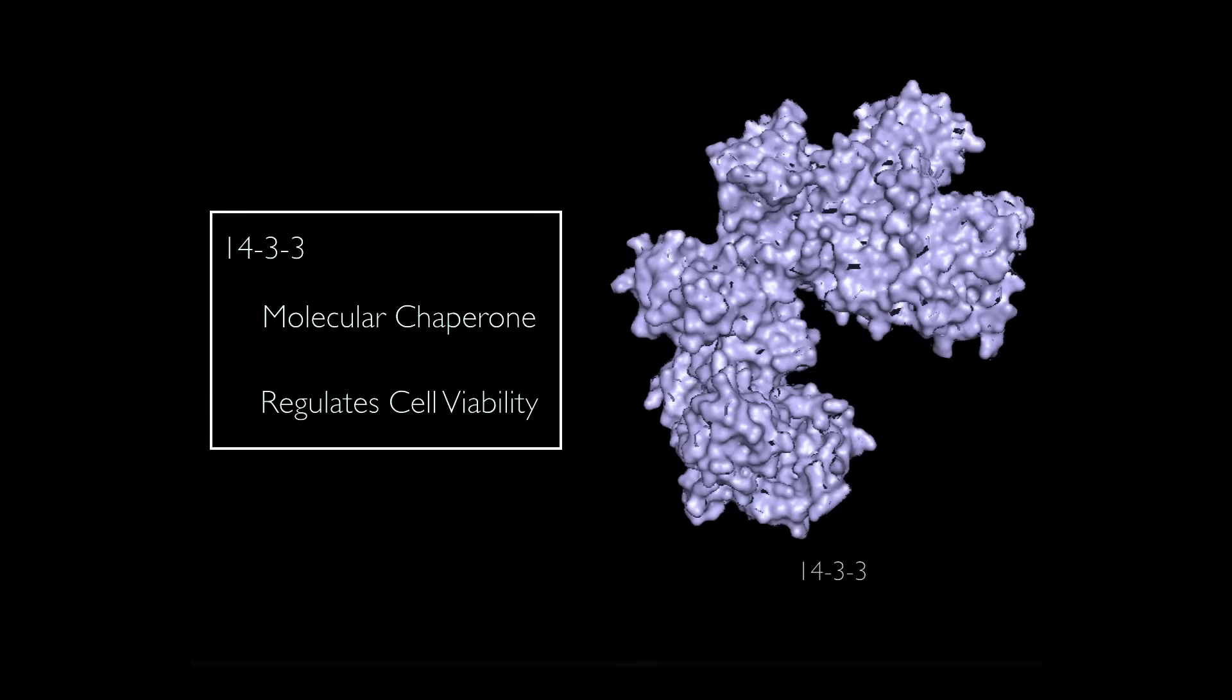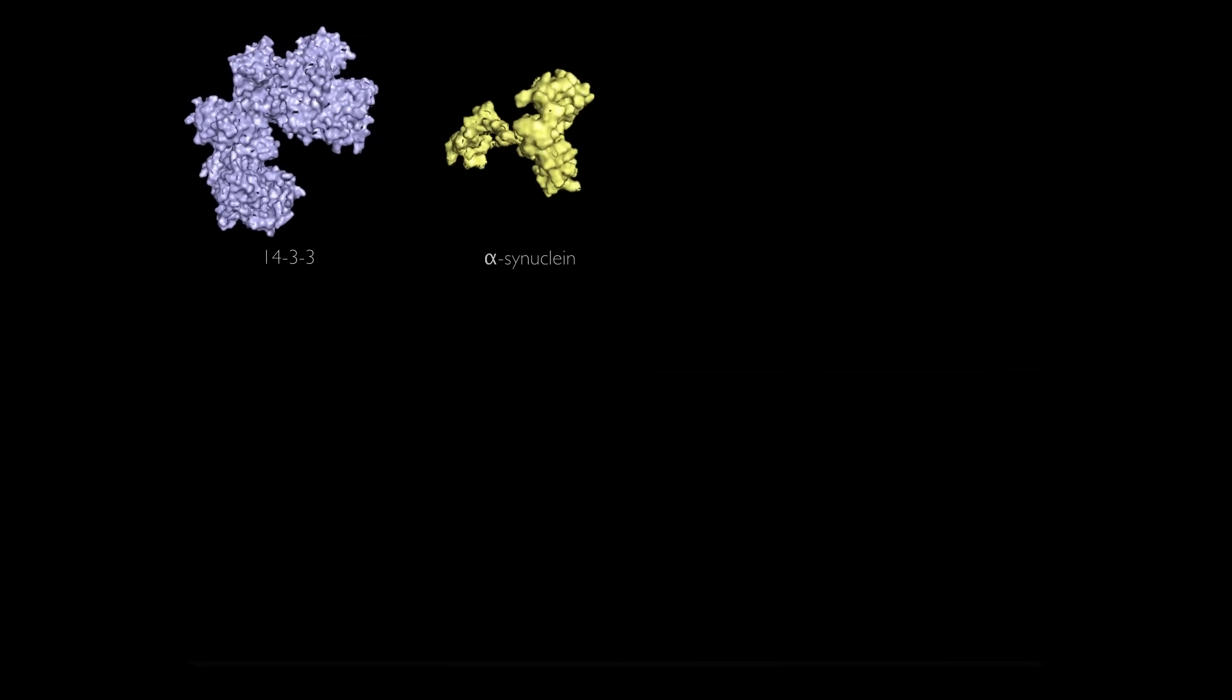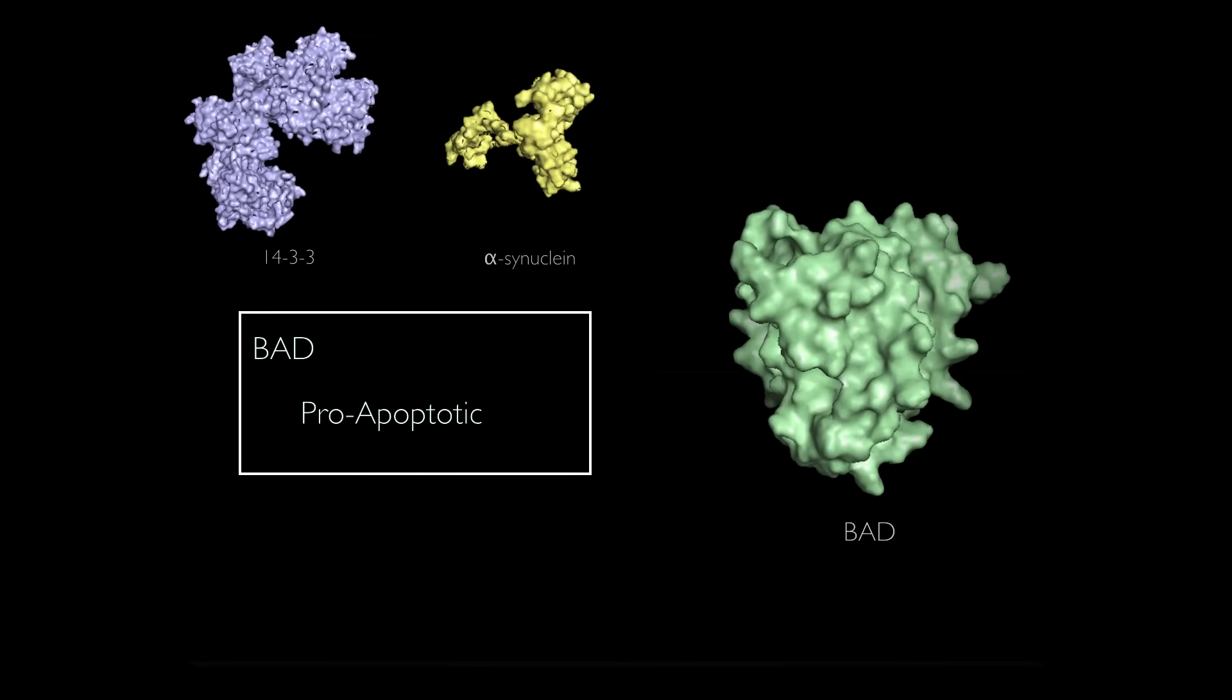14-3-3, a molecular chaperone that indirectly regulates cell growth and viability. Alpha-synuclein. BAD, a pro-apoptotic protein.